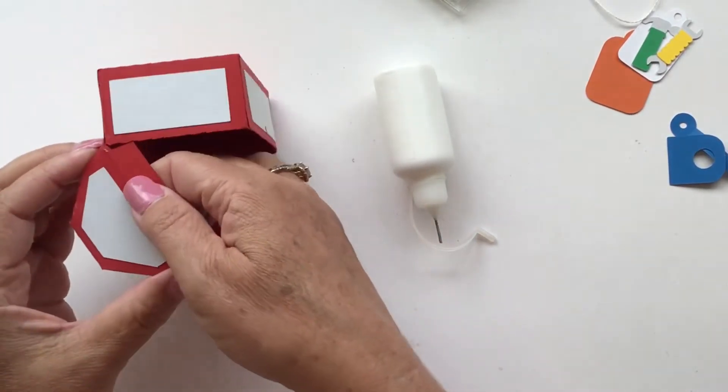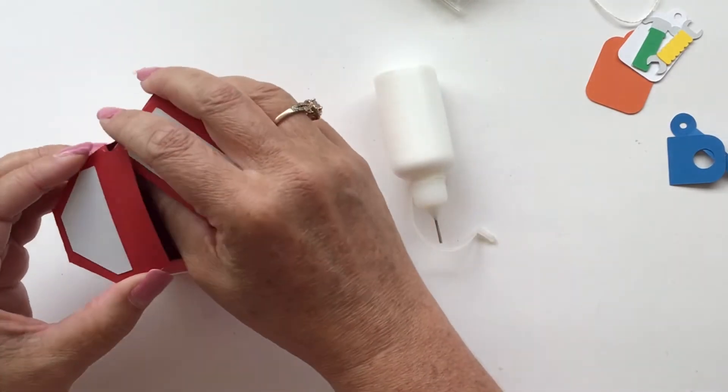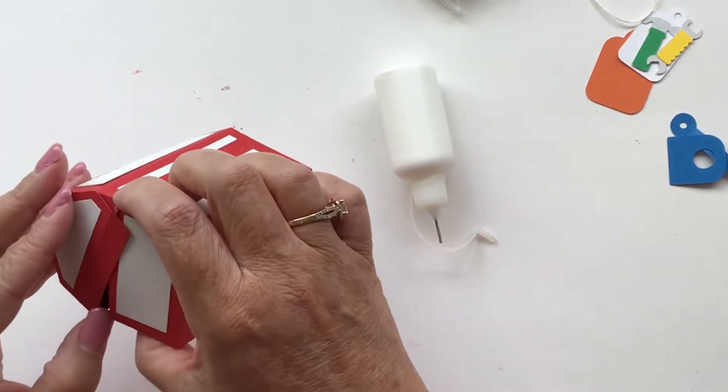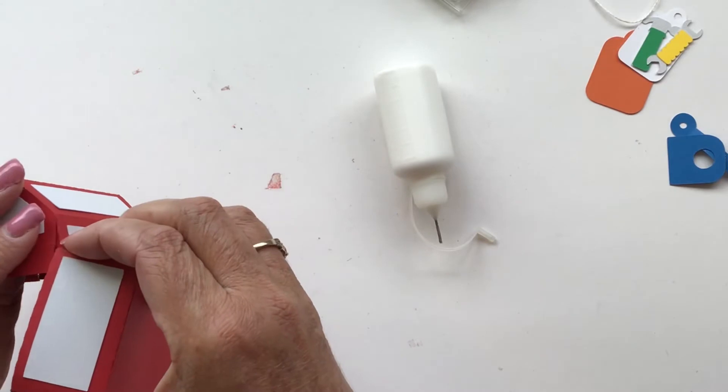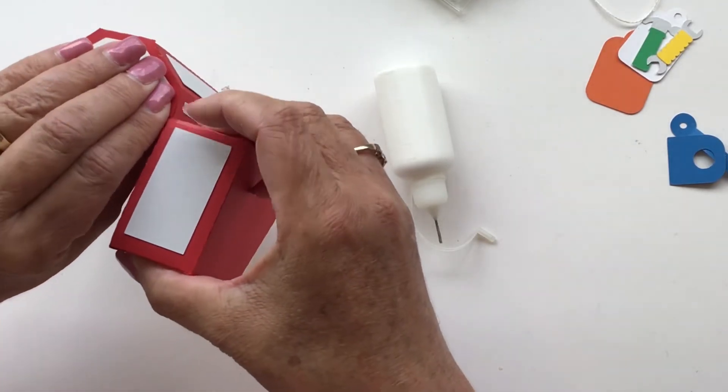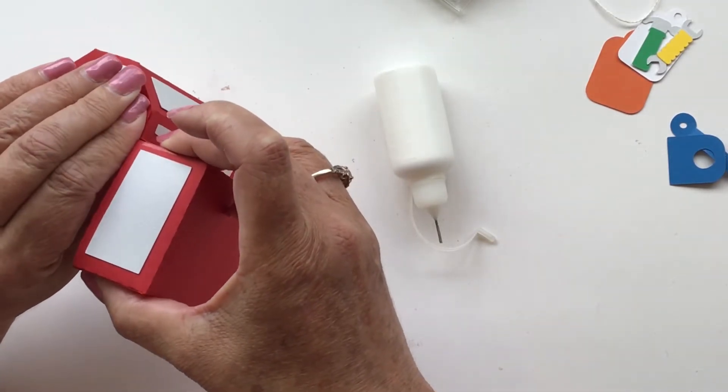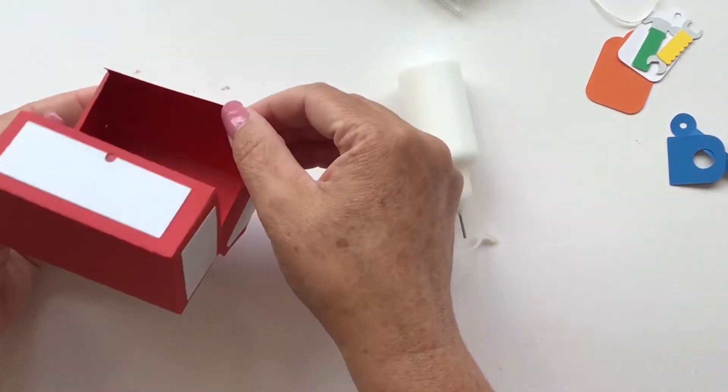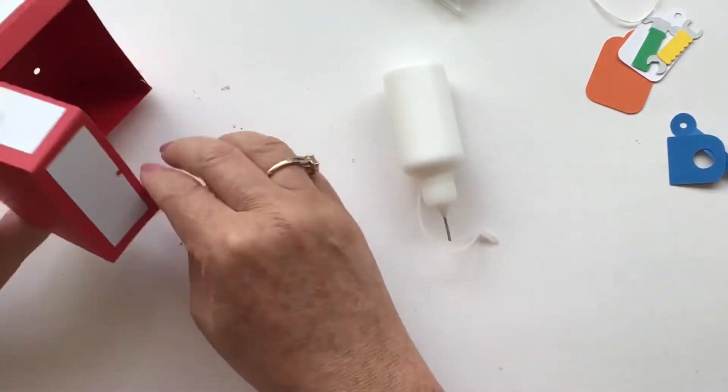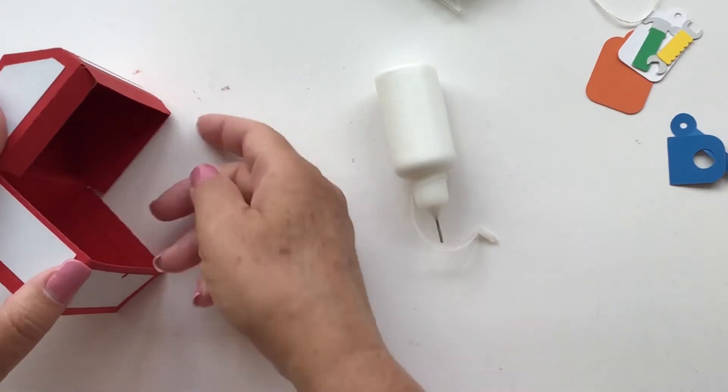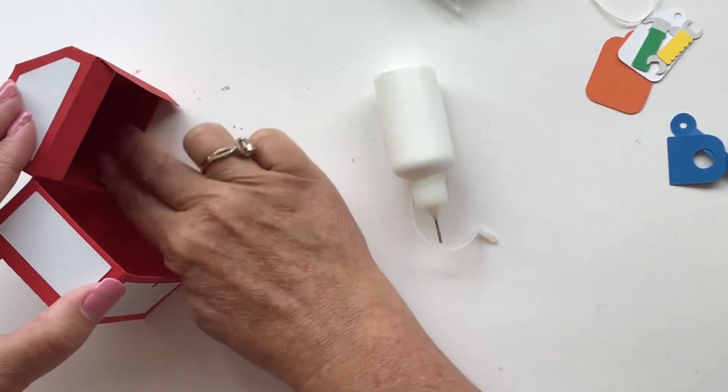That last little tab in there, and it's usually the trickiest one is that last tab. And then when you've got all those, then again you're going to fold these tabs to the inside, again just to give it a little bit of strength.